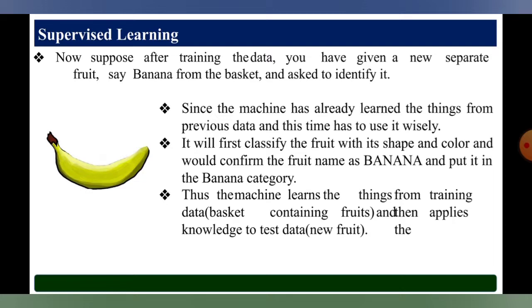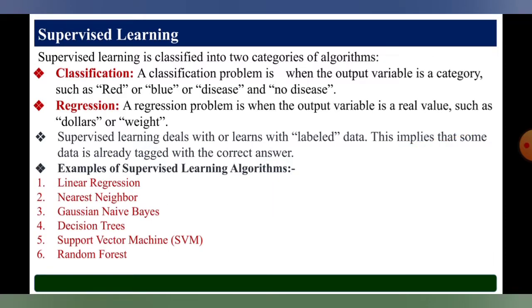Supervised learning is classified into two categories of algorithms. First one is classification and second one is regression. In a classification problem, the output variable is a category such as red or blue, or disease or no disease. In a regression problem, the output variable is a real value such as dollars or weight. Supervised learning deals with learning with labeled data.